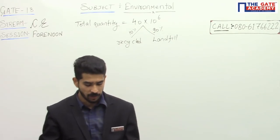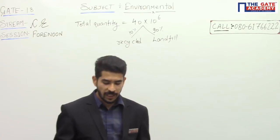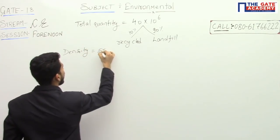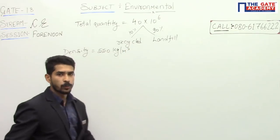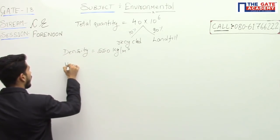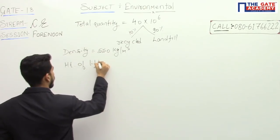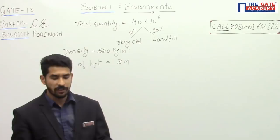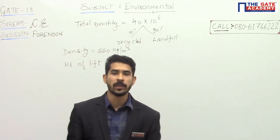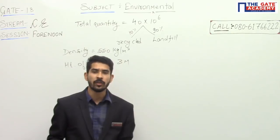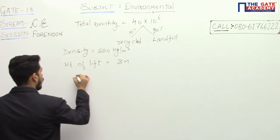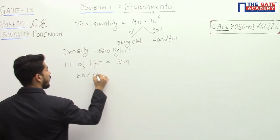90% goes to landfill. The density of MSW is 550 kg per meter cube. The height of the lift is 3 meters — so inside the landfill, the height of the lift is equal to 3 meters. Then it says 80% of the landfill is occupied by MSW, and we are asked to find the surface area of the landfill.